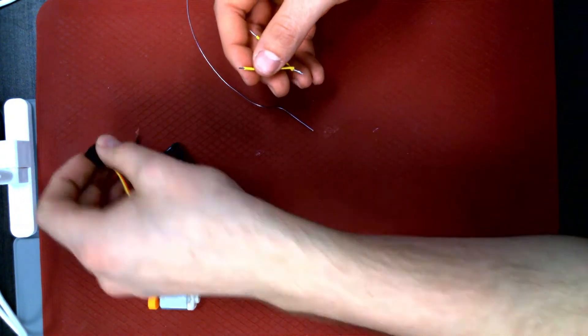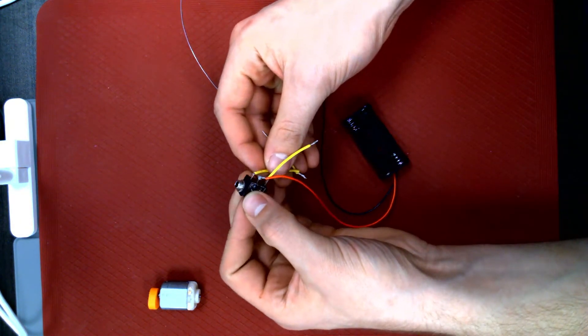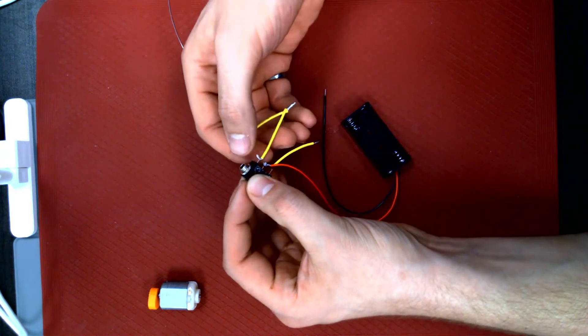Solder one of the free ends to the jack pin directly between the jack outlet itself and the middle pin you just soldered to, ensuring that the other free end points away from the other two pins.